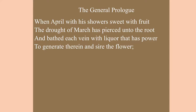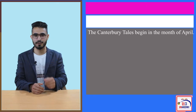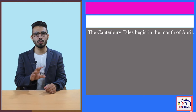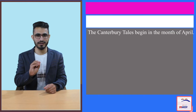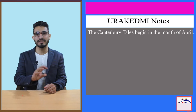He says that this month of April, with his shower sweet with fruit, the draught of March has pierced unto the root and bathed each vein with liquor that has power to generate therein and sire the flowers. This is a month which brings fertile showers — there is rainfall, sweet showers.